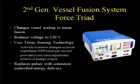There is now a second-generation LigaSure called the Force Triad. With faster computers and processors, they were able to change the software within the generator. It still measures tissue impedance between the electrodes, but now does so at 4,000 times per second, and is able to continuously regulate the current and wattage based on tissue impedance to maximize vessel sealing pressures.